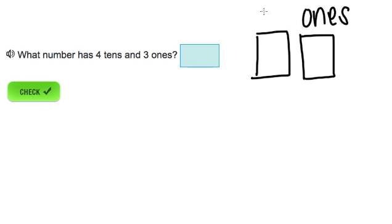And then right next to the ones place to the left is our tens place. So how many ones do we have? We have three ones. And how many tens do we have? We have four tens.